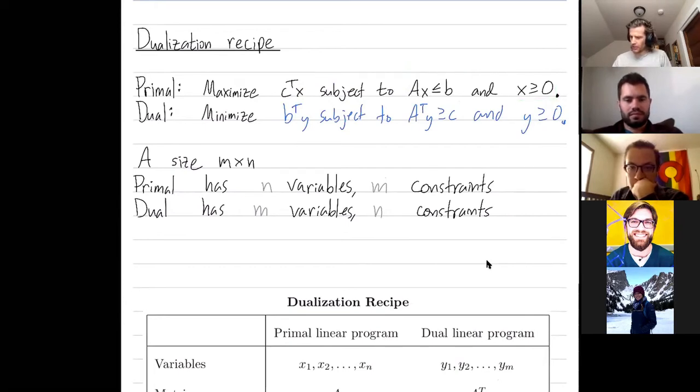One thing to point out in this above dualization particular dualization is that matrix A is m by n which means that our primal problem has n variables x1 through xn and it has m constraints given by the m rows of this matrix A.